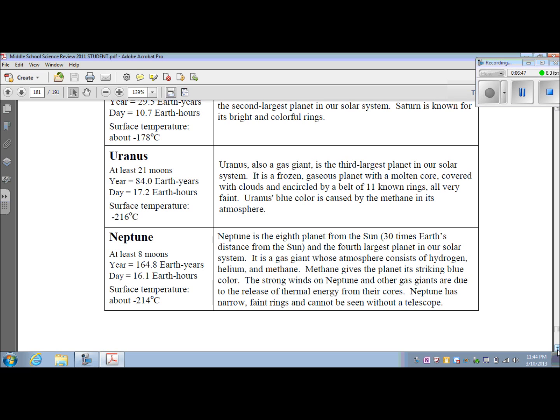The next planet is Neptune. It has at least eight moons. Its year is 164.8 Earth years. Its day is 16.1 Earth hours. And its surface temperature is about negative 214 degrees Celsius. Neptune is the eighth planet from the Sun, 30 times Earth's distance from the Sun, and the fourth largest planet in our solar system. It is a gas giant whose atmosphere consists of hydrogen, helium, and methane. Methane gives the planet its striking blue color. The strong winds on Neptune and other gas giants are due to the release of thermal energy from their cores. Neptune has faint, narrow rings that cannot be seen without a telescope.